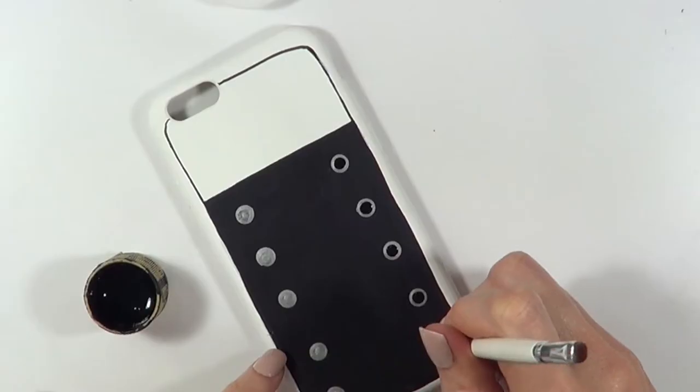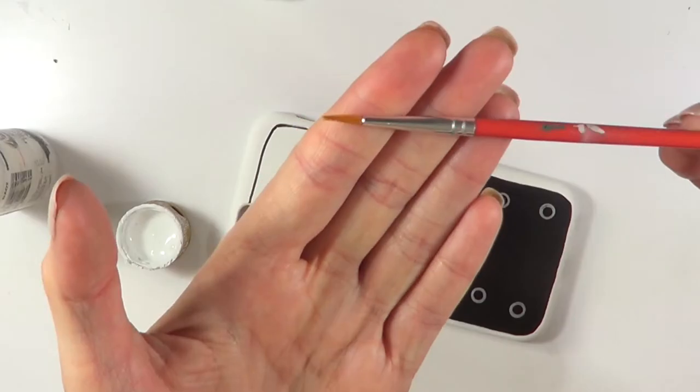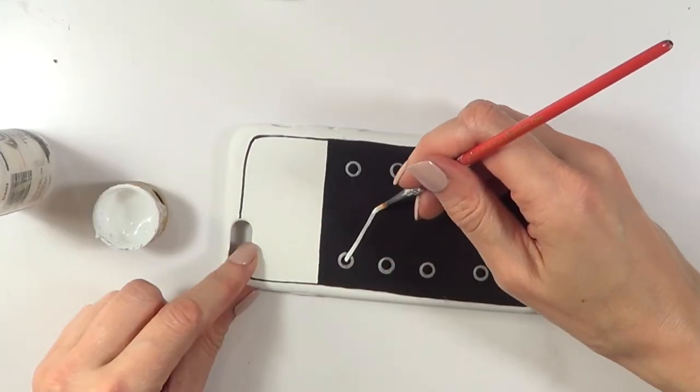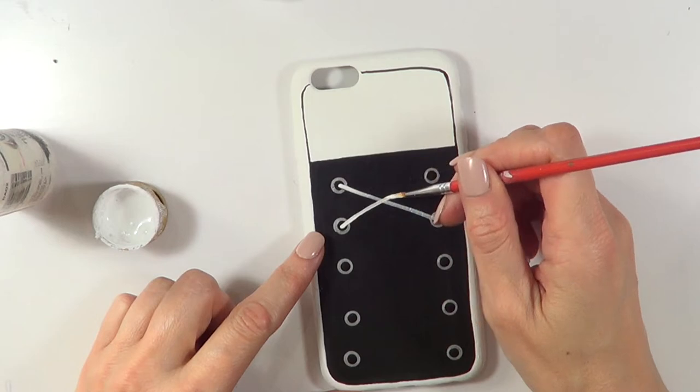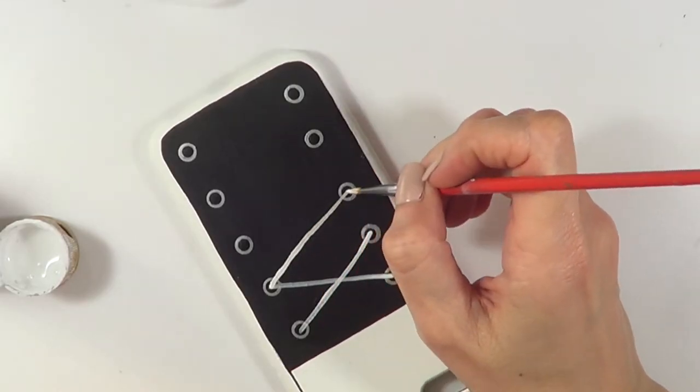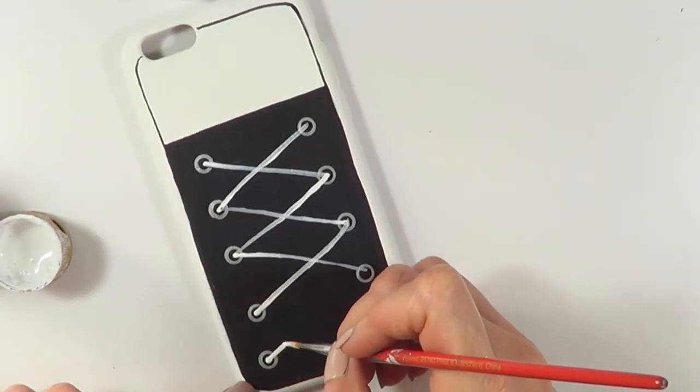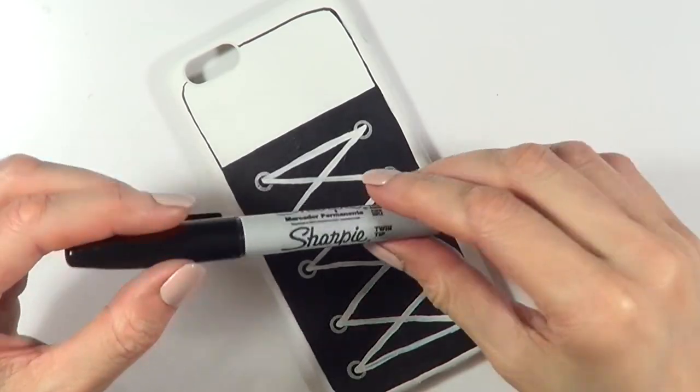Then I'm going to be taking this brush I got at the art section of Michael's, and with this I'm going to just be working on the laces, just painting a bunch of crossing lines all over the place until I'm done.